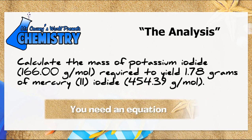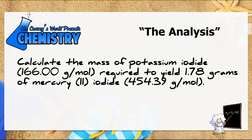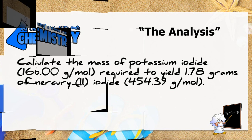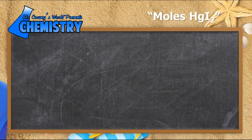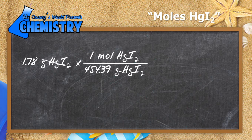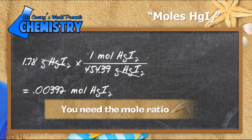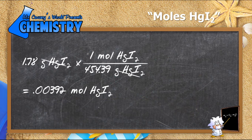First, I'll convert my grams to moles. I'll find an equation from one of our textbooks showing how mercury-2 iodide is prepared. Moles of mercury iodide: I take my grams, multiply by the molar mass, and cross out my units. My answer is 0.002392 moles of mercury-2 iodide.